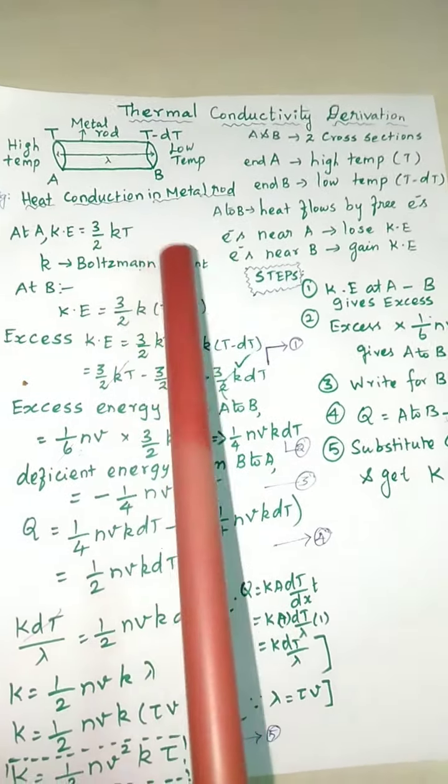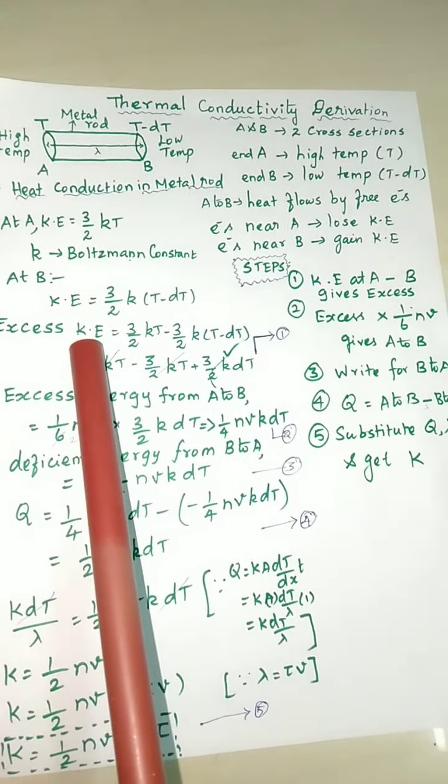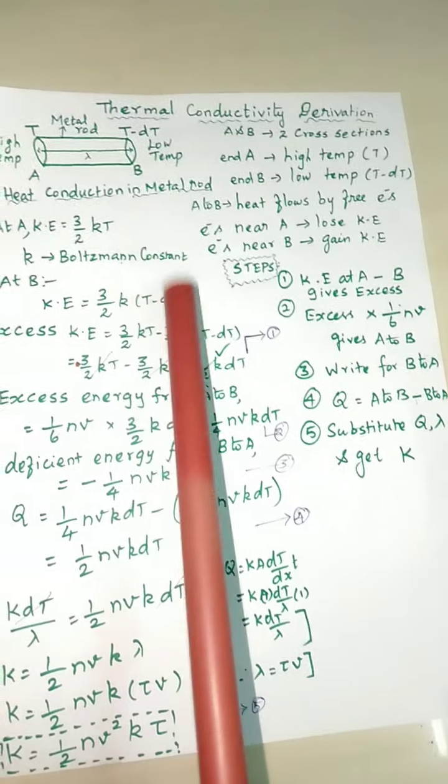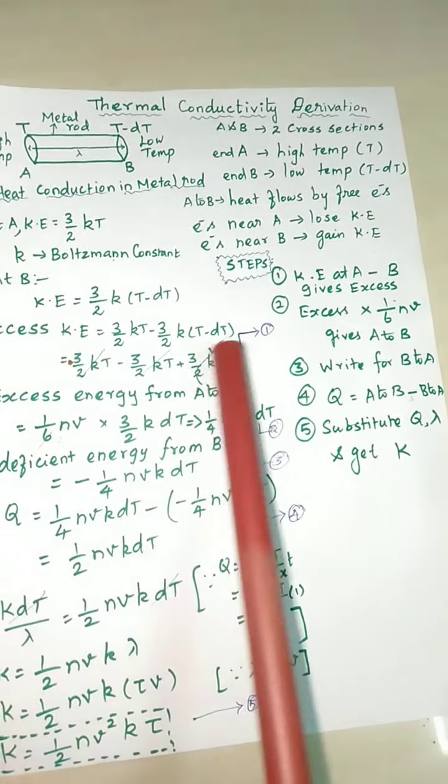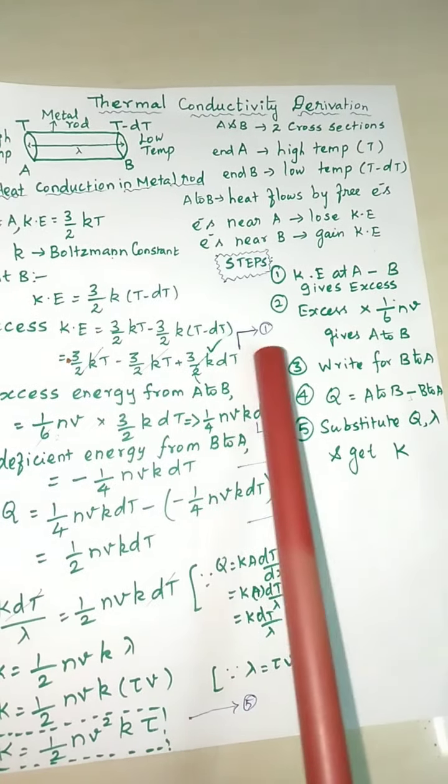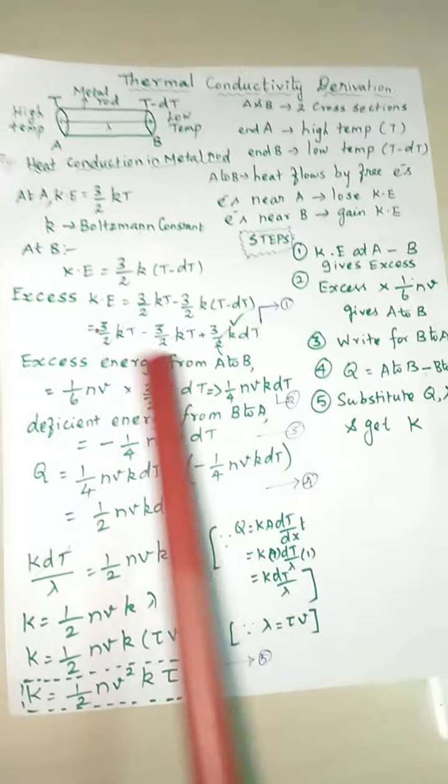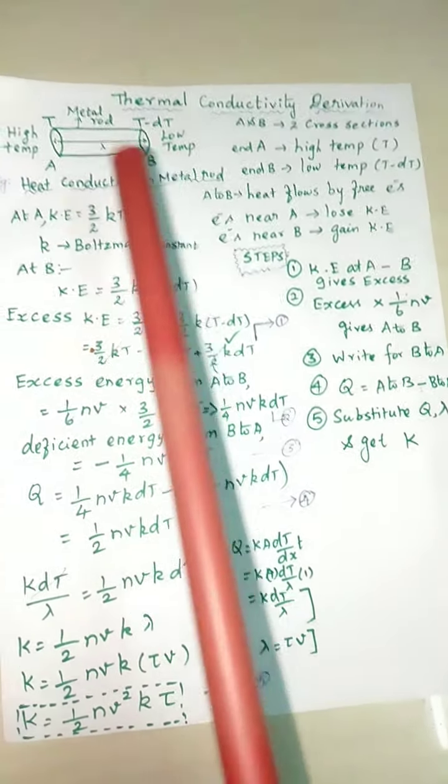At the B end, the temperature will be written as T minus DT instead of T. Then the excess of energy - this first one minus second one: 3 by 2 kT minus 3 by 2 k(T minus DT). Rearranging that, these two terms will be cancelled. We have this term only.